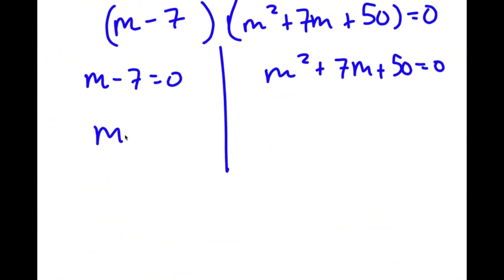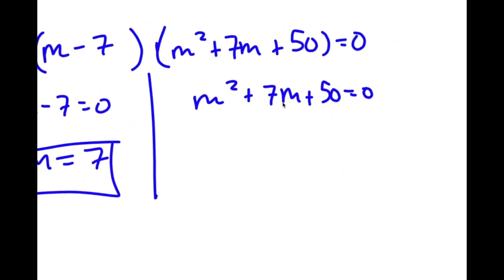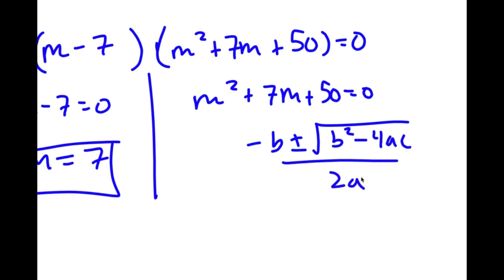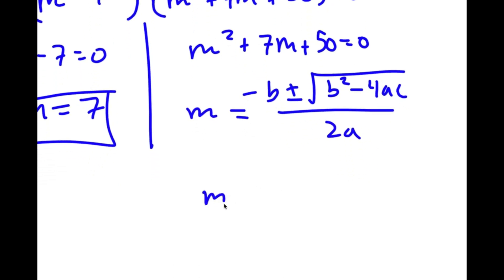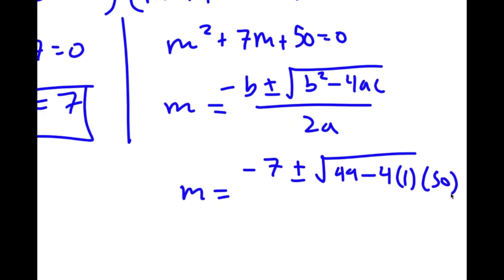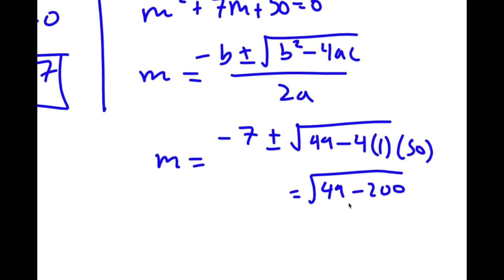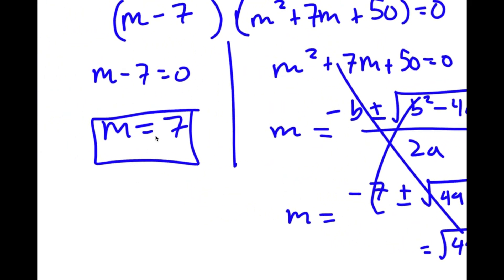From m minus 7 equals 0, we get m equals 7, so this is already one solution. For m² plus 7m plus 50 equals 0, I use the quadratic formula: negative b plus or minus the square root of b² minus 4ac, all over 2a. This gives negative 7 plus or minus the square root of 49 minus 4 times 1 times 50, which is the square root of 49 minus 200 — a negative number — meaning this has no real solutions. My only solution is m equals 7.